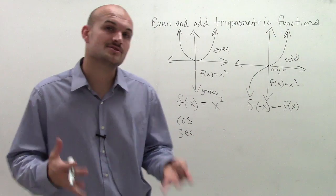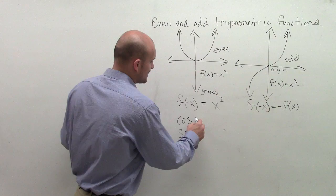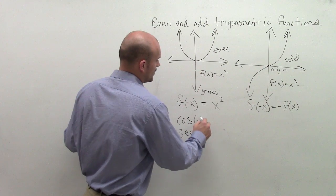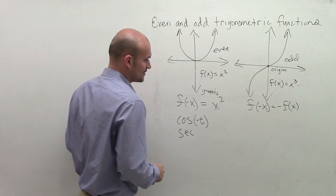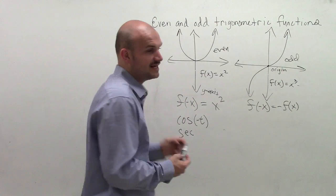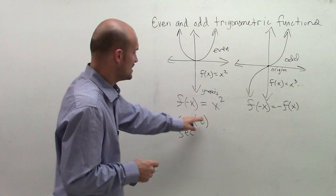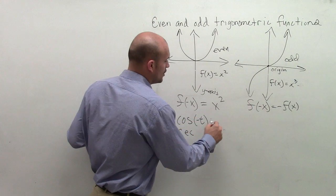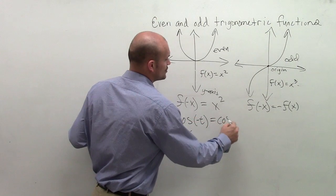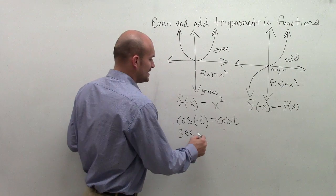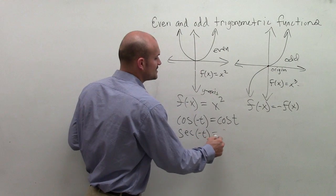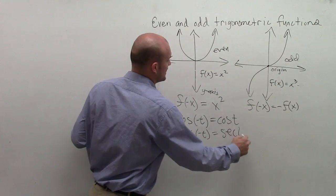So why is this so important? Well, this is so important because you need to understand if I say the cosine of a negative value. So if you take the cosine of negative t, we know that that's going to be equal to the cosine of t. And the secant of a negative value, the same thing. That's going to be equal to secant of t.